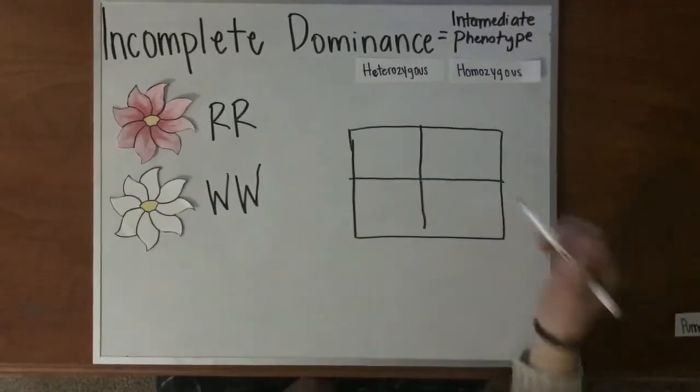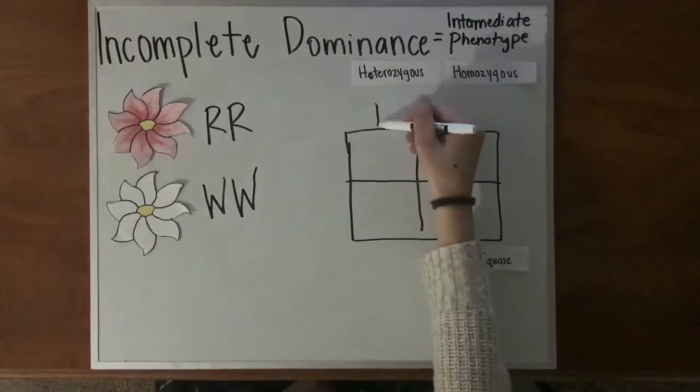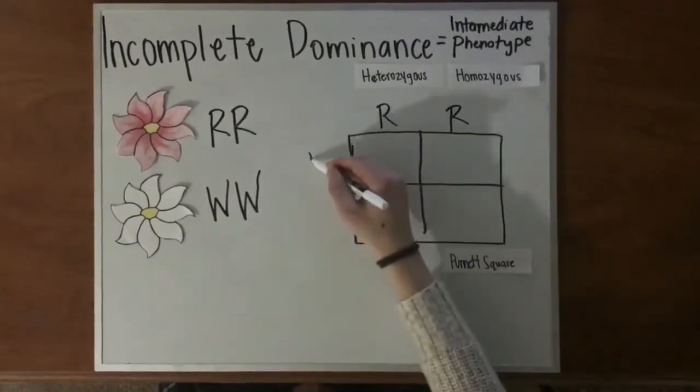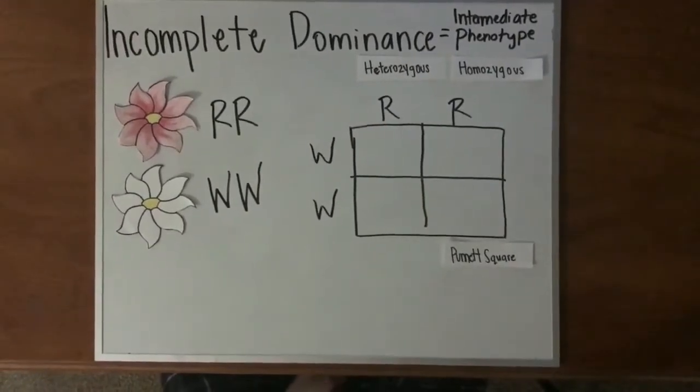This is a Punnett square. We will put the red flower's alleles on top as big R, big R, and the white flower's alleles on the side as big W, big W. Now, fill in the boxes like we have done in class.